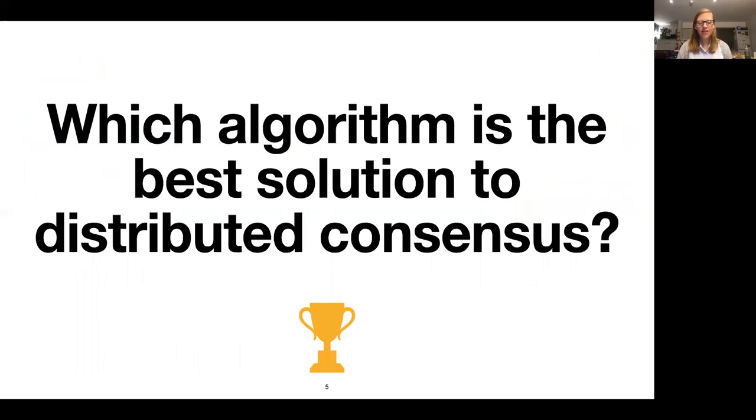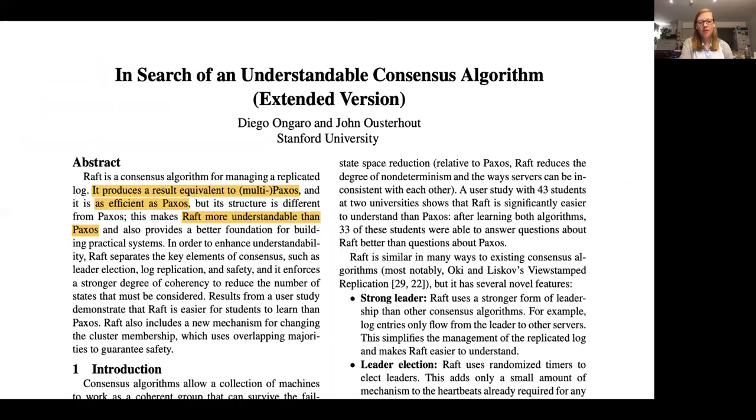Let's have a look at what the Raft paper has to say about this. The Raft paper addresses this straight away in the second sentence. It says that Raft produces a result equivalent to Paxos, Raft is as efficient as Paxos, and Raft is more understandable than Paxos.